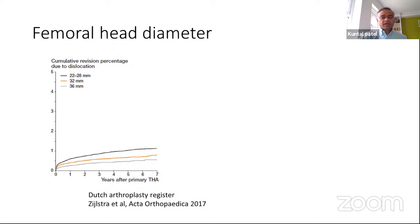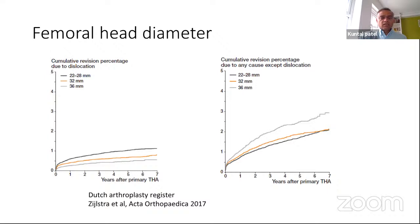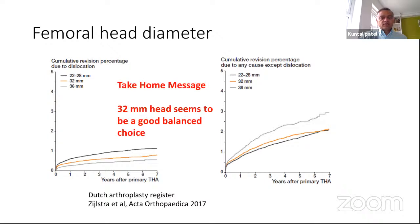Looking at data from the Dutch registry: a 36mm head has the lowest risk of dislocation and lowest risk of revision hip surgery. However, if you look at revision for all causes, a 32mm head fares best because with a 36mm head there is increased risk of poly wear. The take-home message is that a 32mm femoral head is a good balanced choice for most hip surgeons.